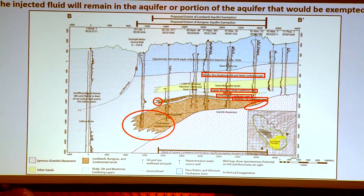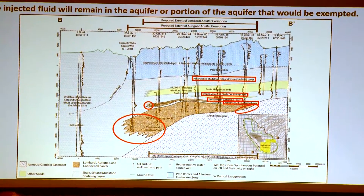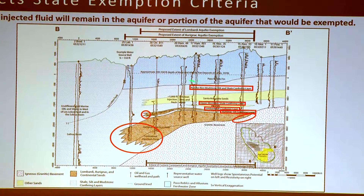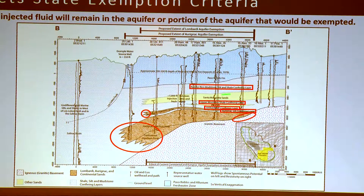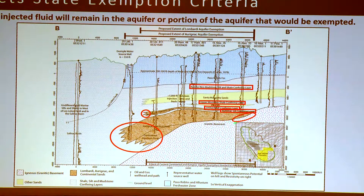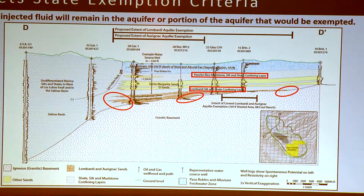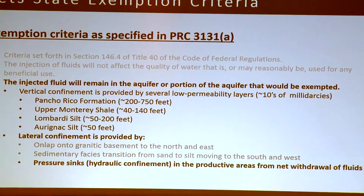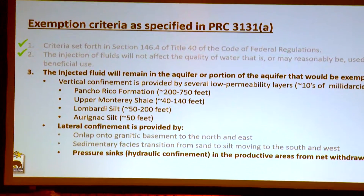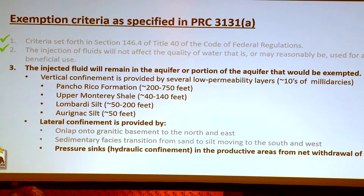I have a number of cross-sections through the field that show that same relationship. Here's one across the southern end of the field — we see vertical confining layers, and on the east side we get the on-lap onto granitic basement terminating the Aranac and Lombardia, while on the west side we get the facies change. Further up the field we see the same pattern, and we see it again in the northern part of the field. Based on that, there's a lot of evidence to suggest we have both vertical confinement and lateral confinement of injected fluid.